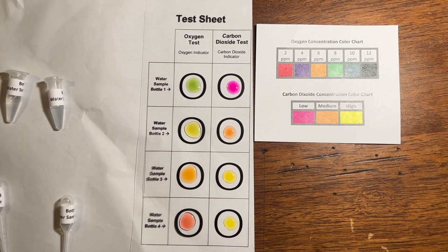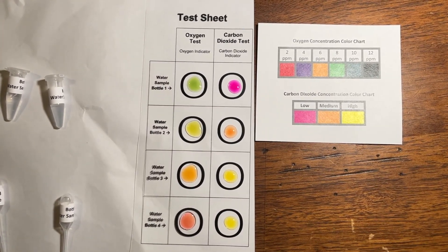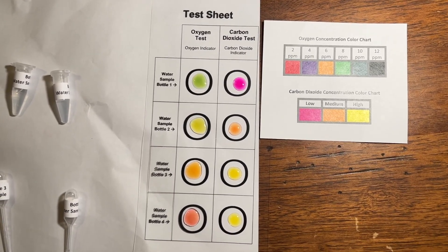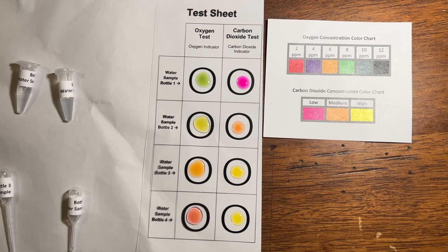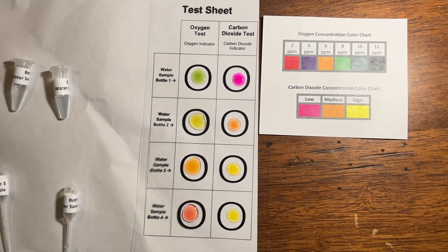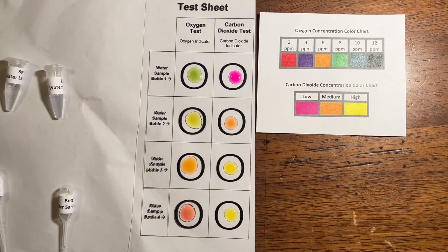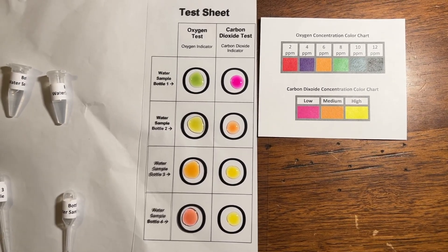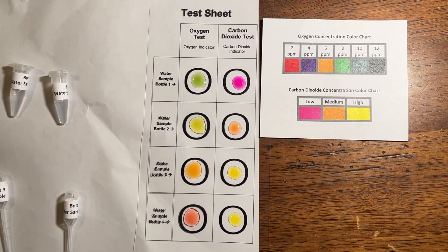Finally, you can test the carbon dioxide concentration using a carbon dioxide indicator. Place one drop of carbon dioxide indicator and two drops from each of the bottle samples. Then you can calculate the final oxygen concentration and verify that with the carbon dioxide concentration.